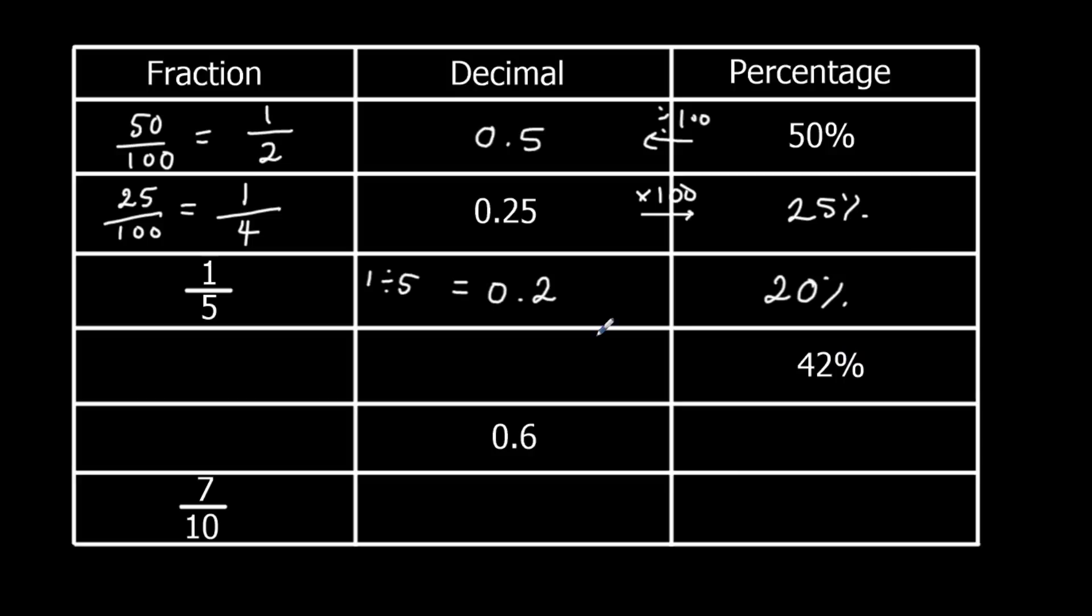42%. Decimal, divide by 100, 0.42. And fraction, 42 over 100, 21 over 50. And I don't think they're in the same times table. So 21 over 50.